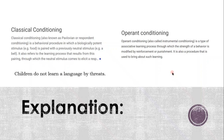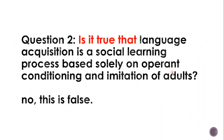Children do not learn language by threats or by food. So, language acquisition is not a social learning process based solely on operant conditioning and imitation of adults — because operant conditioning involves some sort of biological stimulus such as food. Children certainly don't imitate adults all the time. The language acquisition process is much more complicated than this.